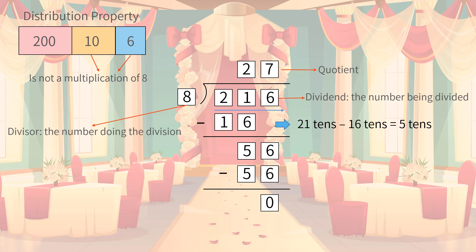216 divided by 8 equals 27. The student banquet would have 27 tables of people in total. Hey guys, have you found the correct answer?